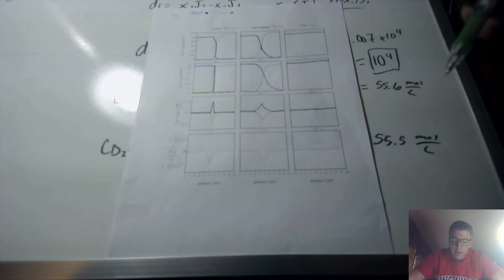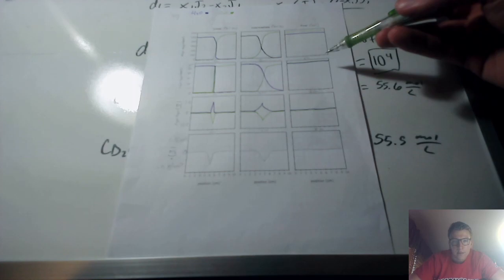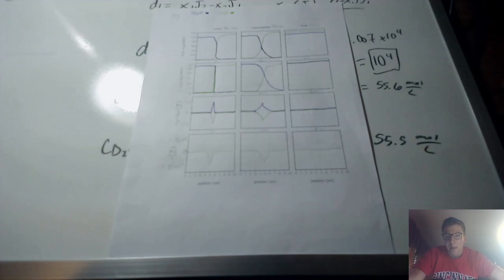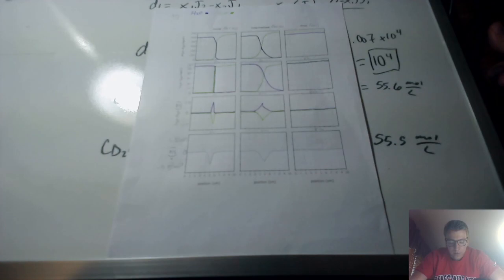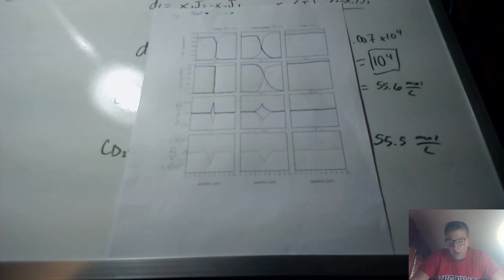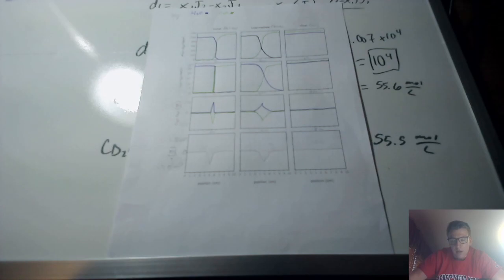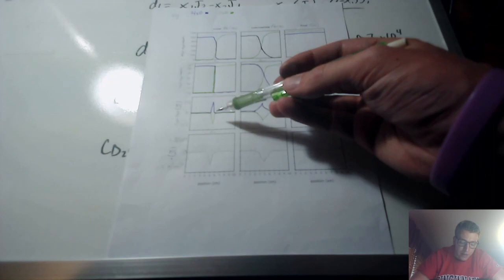At T equals infinity, the molar concentrations level out at each component's respective value uniformly throughout the whole capillary. The third row shows molar diffusion flux of water and deuterium. At T equals 0.1 seconds, the molar diffusive flux peaks at the five centimeter mark: positive 2.78 moles per meter squared per second for water and negative 2.78 for deuterium.